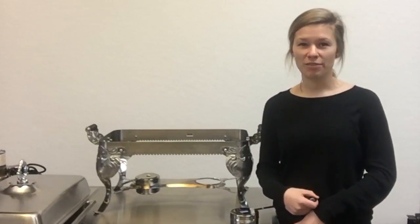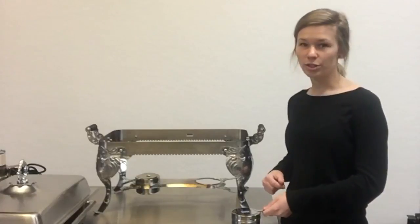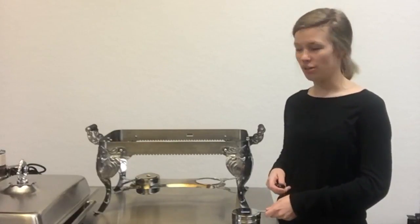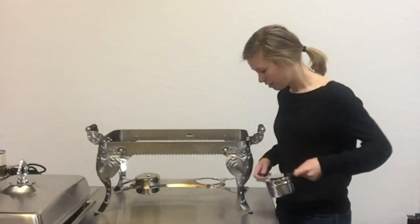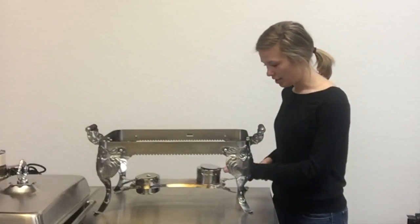It's easier to place your chafing fuel inside the holders before you put the water pan and the food pan on your chafing dish. You just set it in like that.